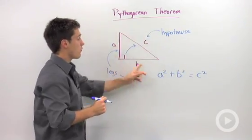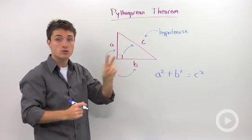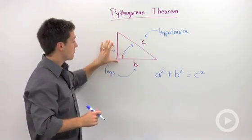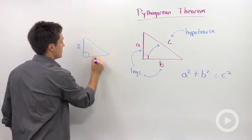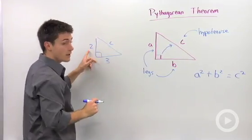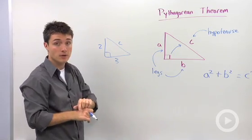So if you're trying to solve for one of these variables, you're going to need two of them. The easiest problem that you're going to see using the Pythagorean Theorem is one where you know your two legs and you're trying to find your hypotenuse.